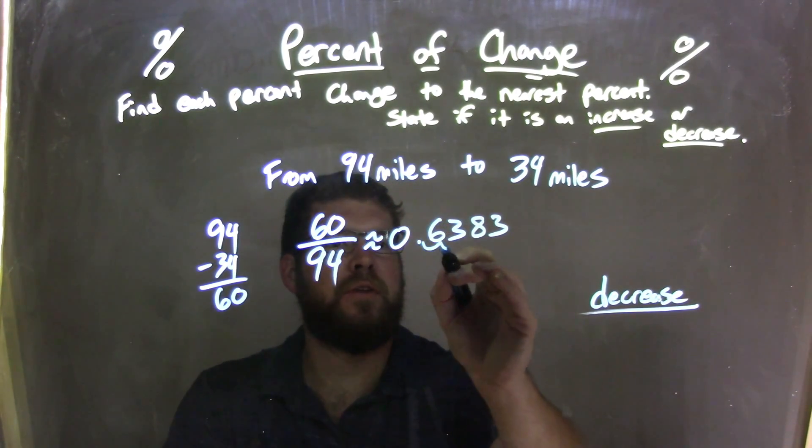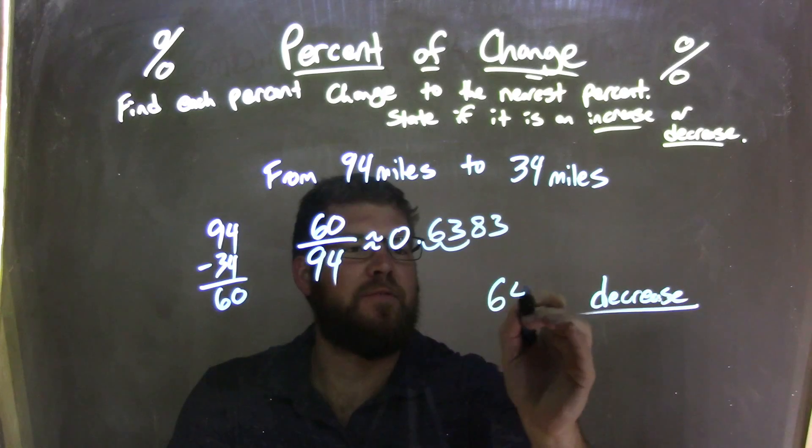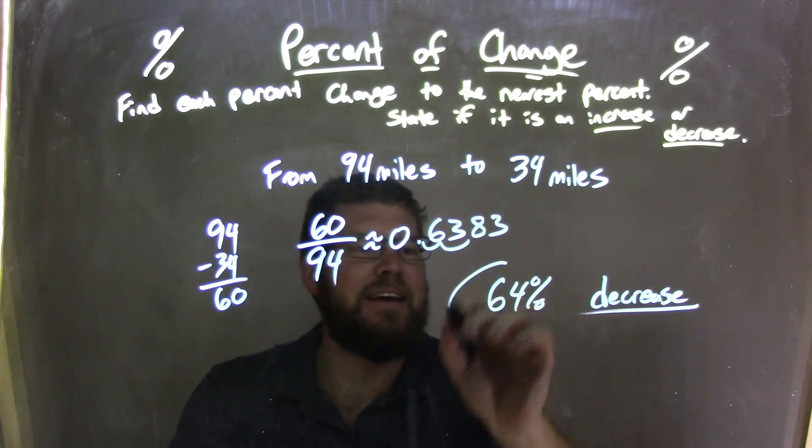Percent moves us over two units. We round from there. 8 causes that 3 to go up to a 4. So, we have a 64% decrease.